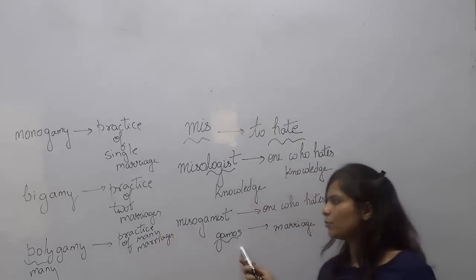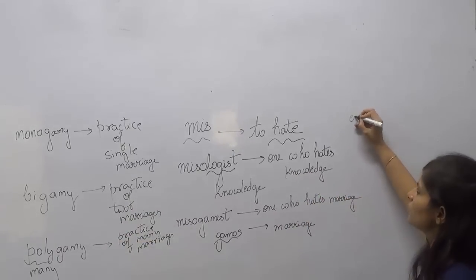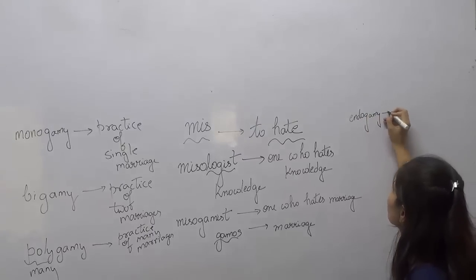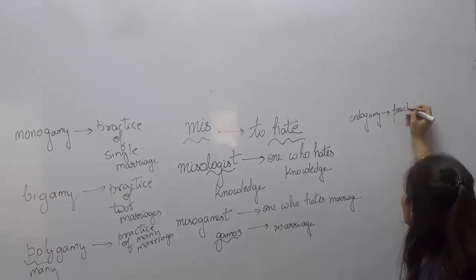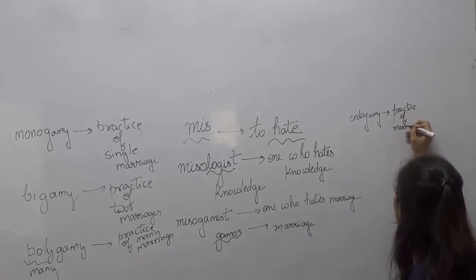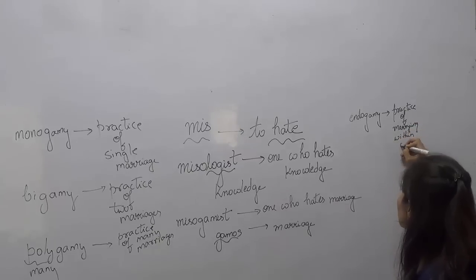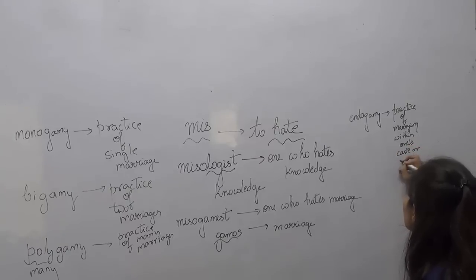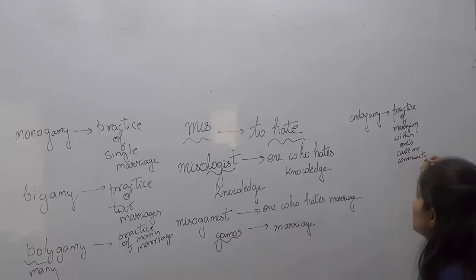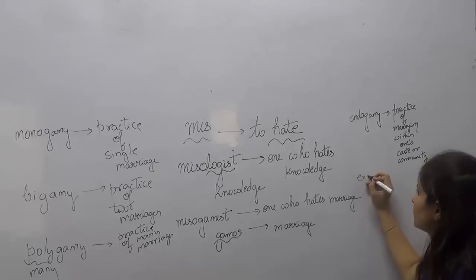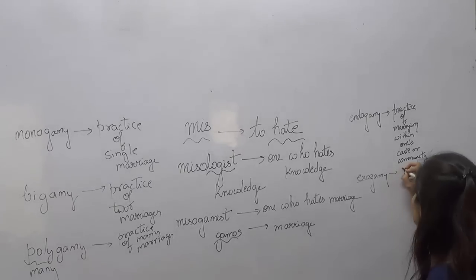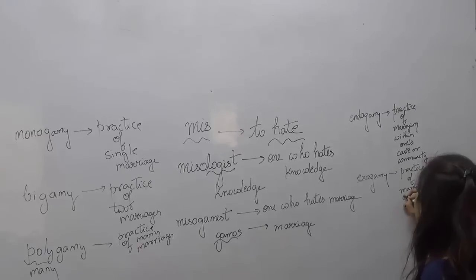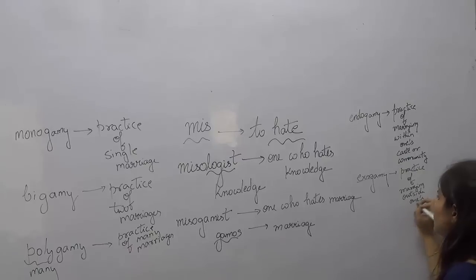So we have studied the root word 'gamos' and done three words from it. One more word: 'endogamy'. The meaning of 'endo' is inner, and 'gamy' is marriage. So endogamy is the practice of marrying within one's own caste or community. Just the opposite of endogamy is 'exogamy'. 'Exo' means outside, so exogamy is the practice of marrying outside one's caste or community.